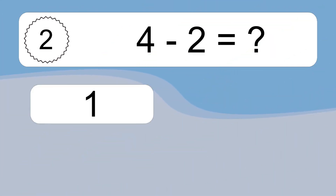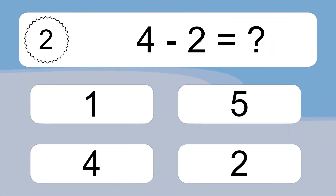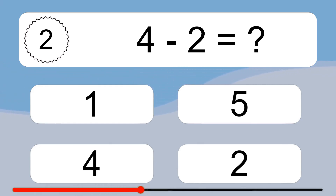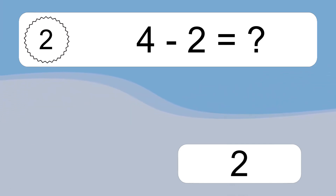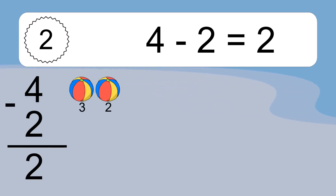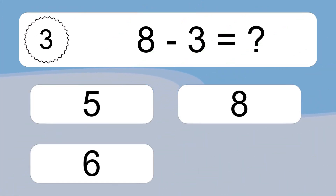4 minus 2 equals what? 4 minus 2 equals 2. Let's count it: 3, 2.